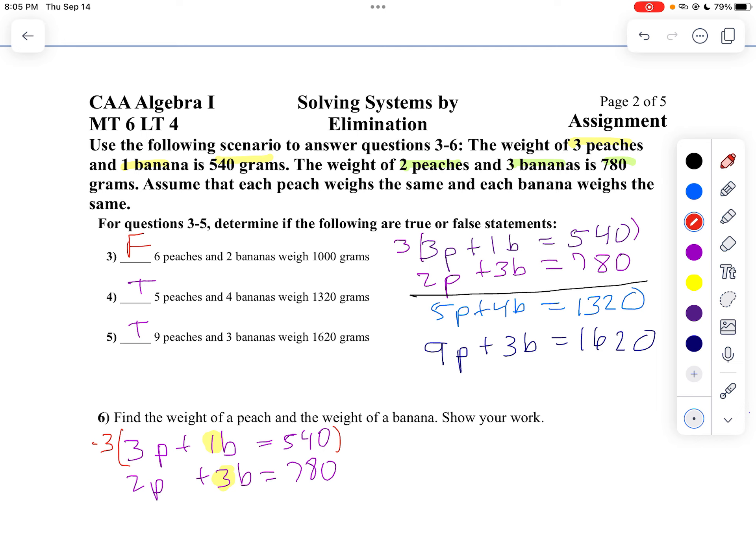And so if I multiply the top equation by negative three, my new system will be negative 9p minus 3b equals negative 1320. My second equation, 2p plus 3b equals 780. And I notice I copied 1320 down incorrectly. I forgot my 2 there. So I'm going to go back and put my 2 in there.